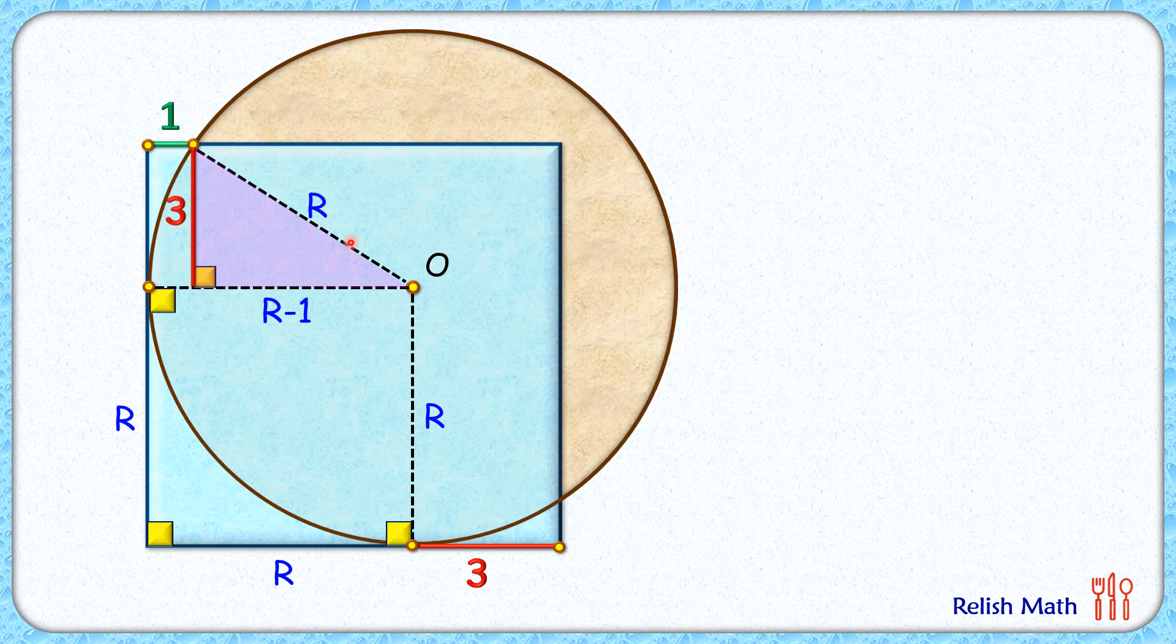Applying Pythagorean theorem in this right angle triangle, we will get 3² + (R-1)² = R². Simplifying it by opening the bracket, now both the side R² will get cancelled down.